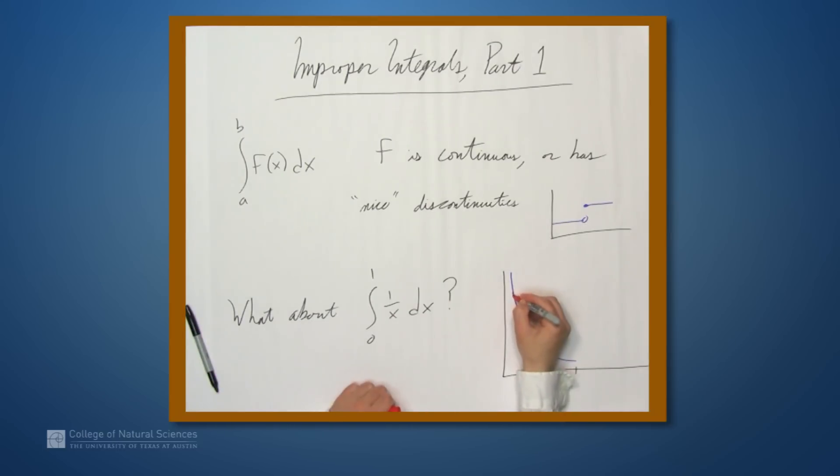But what we can try is instead of finding the integral from 0 to 1, we'll find the integral from, let's say, a to 1. We'll find this area inside here. And then we'll move a a little bit closer to 0, and then a little bit closer to 0, and closer and closer and closer, and we'll see whether those areas are approaching some limit. And that's how we're going to define something like the integral from 0 to 1 of 1 over x.